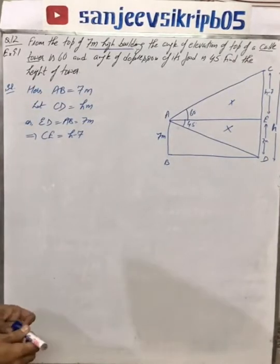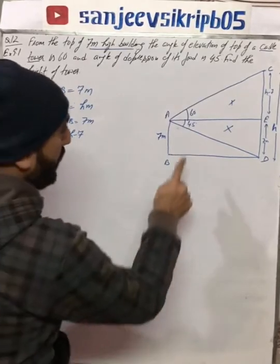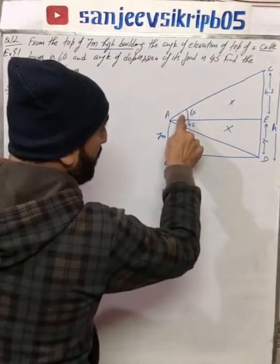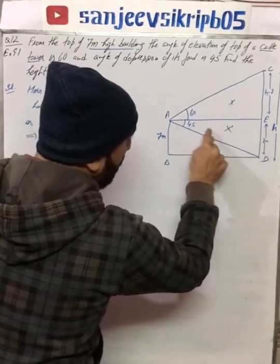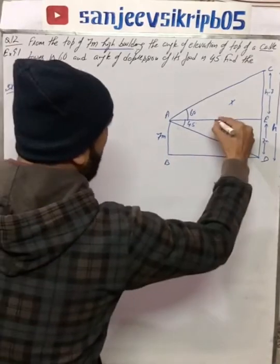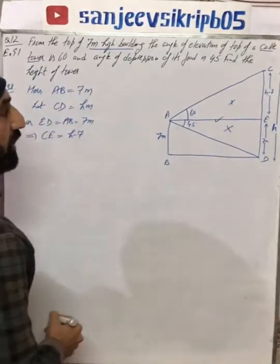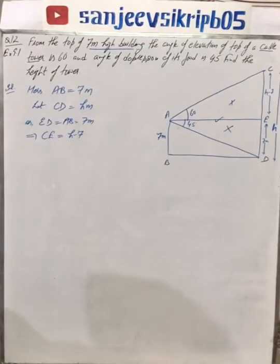So if you look at these two triangles, they are perpendicular given and the base is common. Base AE is common. So perpendicular and base, the ratio is the tangent. So we have two triangles and we will apply the tangent. First we will do triangle AED which is 45 degrees.